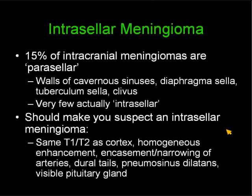Intrasellar meningiomas constitute 15% of all intracranial meningiomas that are parasellar — arising in the walls of the cavernous sinus, diaphragma sellae, tuberculum sellae, or clivus — but very few are purely intrasellar. Features suggesting an intrasellar meningioma include the same T1 and T2 signal as cortex, homogeneous enhancement, encasement and narrowing of arteries, dural tails, pneumosinus dilatans, and occasionally a visible separate pituitary gland, implying the lesion does not arise from it.